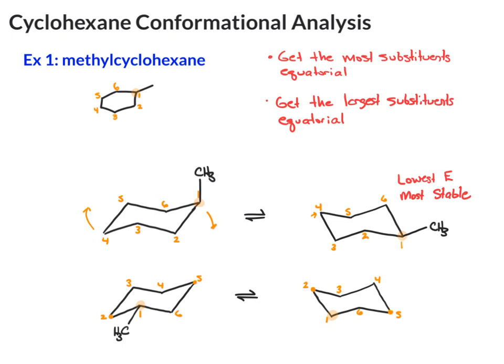After the ring flip, the methyl goes from equatorial to axial. It's still down. Comparing these two conformations, now our first conformation on the left has the methyl equatorial. It's the lowest energy.